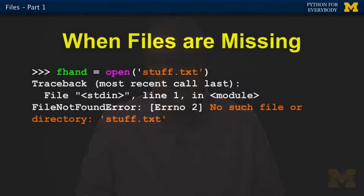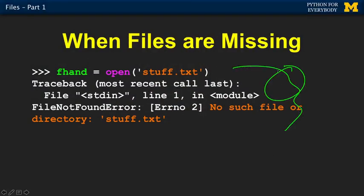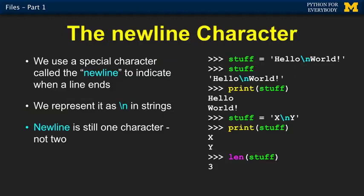If you try to open a file that doesn't exist, you get a traceback error. Later we'll see how to use try and except to deal with the fact that sometimes files don't exist.